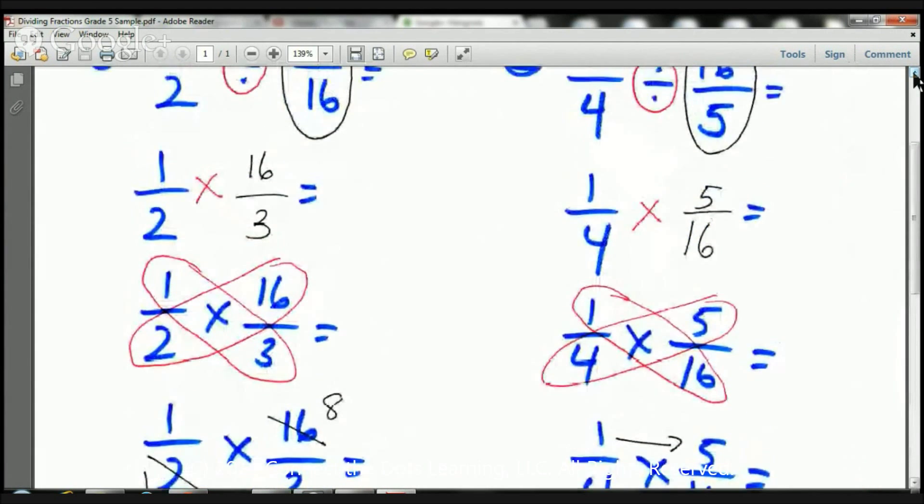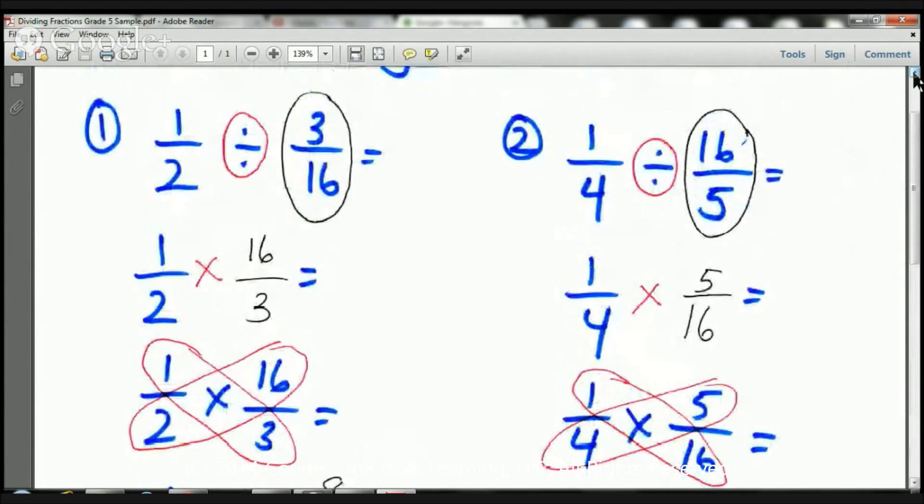So, let's go ahead and take a look at the next example. Our next example is one-fourth divided by sixteen-fifths. Pardon me. What I'm going to do with this division sign, I'm going to change that to a multiplication. Remember, I'm going to switch these two numbers. So, the sixteen is going to become the denominator. The five is going to become the numerator. I just switch them around. That's all I got to do.